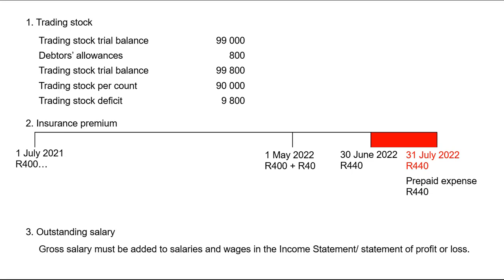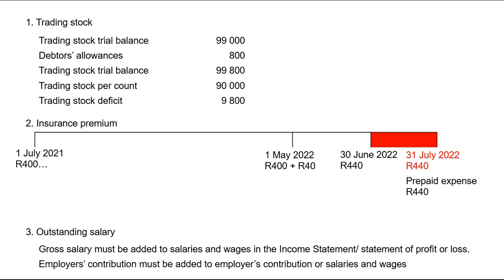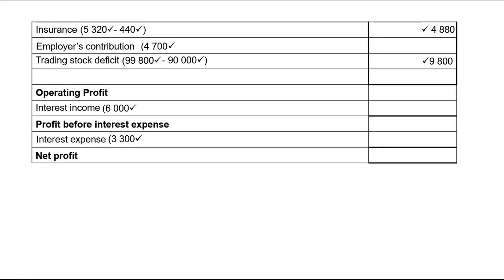Deductions are not recorded here — they go to trade and other payables if unpaid. Employer's contribution of 300 must be added to the employer's contribution expense account. The trial balance already had 4,700 for employer's contribution, so 4,700 plus 300 equals 5,000. If unclear, refer to the podcast on salaries.